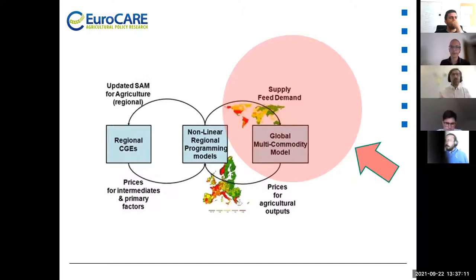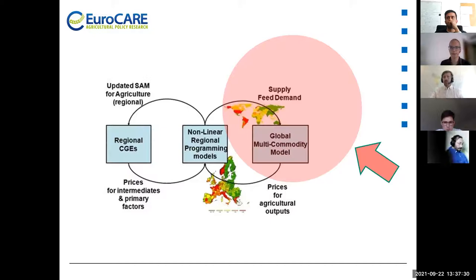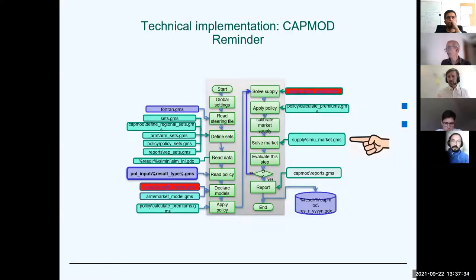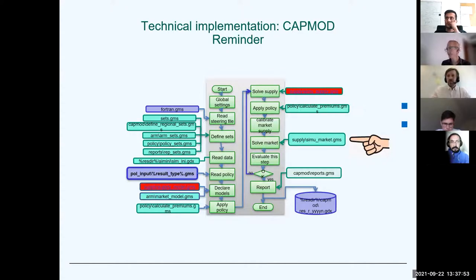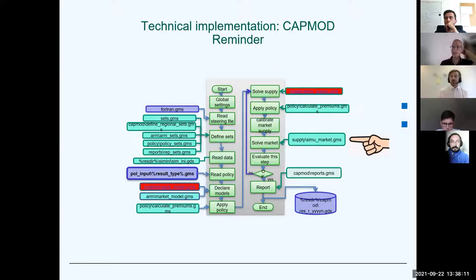This is the basic scheme of the CAPRI modeling system. The two main parts are the nonlinear regional programming models — that's the supply part — and the global multi-commodity model, which is the market model we'll focus on today. Going one level deeper into the GAMS code, there's a network of different GAMS files showing how they connect. This starting-point file is where the market model is executed, and it's worth examining if you want a closer look after the presentation.